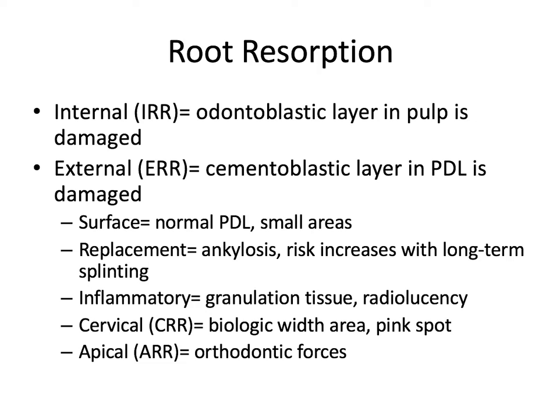A brief review of root resorption: internal root resorption occurs when the odontoblastic layer in the pulp is damaged; external root resorption occurs when the cementoblastic layer in the PDL is damaged. Root resorption is something that can happen after traumatic dental injury. There are various forms of external root resorption: surface replacement — essentially ankylosis — as well as inflammatory, cervical, and apical forms. These are good definitions to know for the board exam.